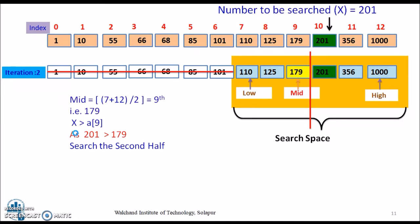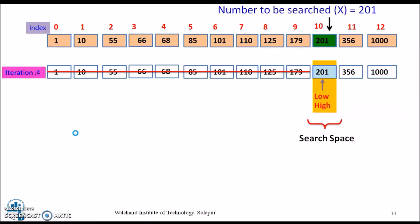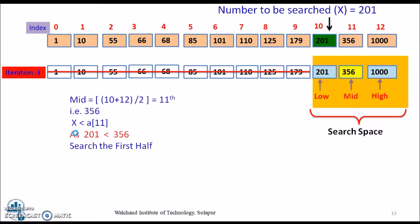The subarray with elements after 179 is taken into iteration 3. The space is further divided, and now the array consists of only 201, 356, and 1000. Select the middle element — the mid element is 356. Since 201 is smaller than 356, we divide the array into 2 halves and consider the subarray before 356.